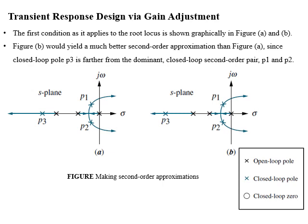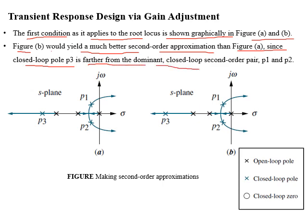We will analyze the conditions for second order approximation graphically. The first condition states that if higher order poles are further in the left half of the S-plane than the dominant pair, those poles define the response. Comparing figures A and B, figure B gives a much better second order approximation than figure A, because the higher order pole P3 is further away from the dominant closed loop second order pair of poles P1 and P2.